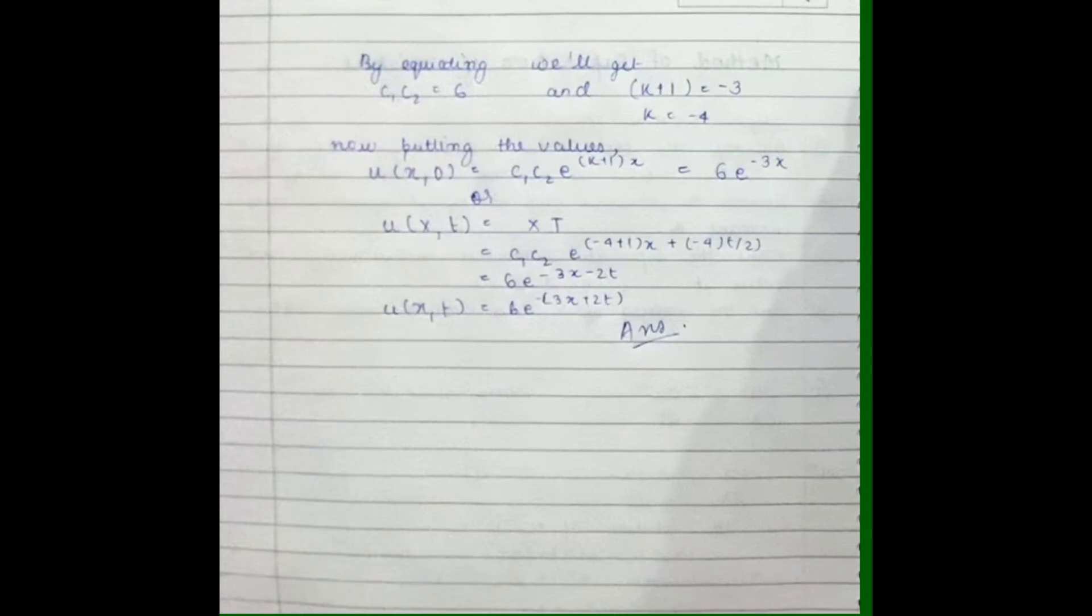Which will lead to k being -4. Now putting the values, we will get u(x,t) = X·T.